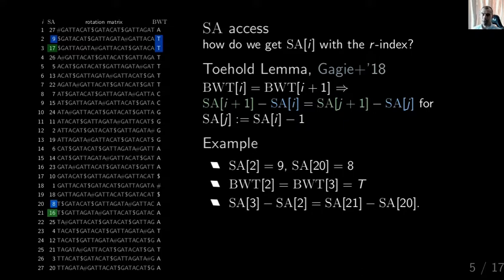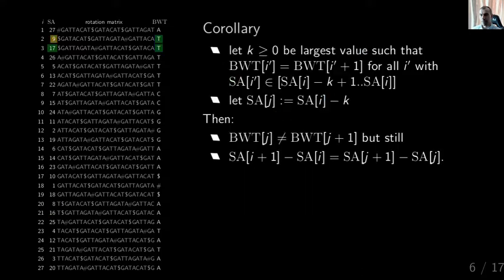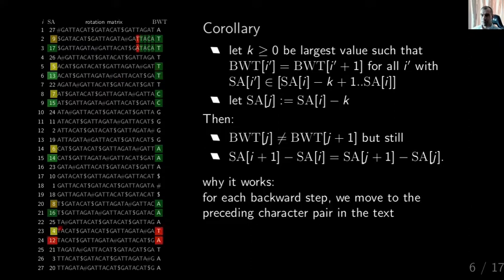You can recurse on this. Where you have equal characters in the BWT, you can apply the toehold lemma — for 7 and 15 the difference is 8, same for 6 and 14, 5 and 13, and 4 and 12. But at position 4 and 12 you have T and A, so they differ, and for 3 and 20 the difference is no longer 8. Using standard backward search steps, you move left in the text until you find the mismatching character pair T and A, which is reflected by T and A in the BWT.